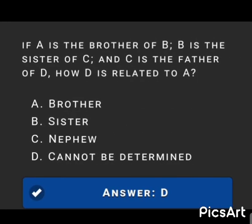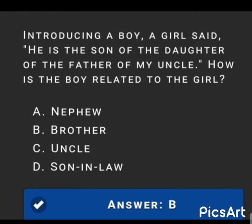Next MCQ: If A is the brother of B, B is the sister of C, and C is the father of D, how is D related to A? The answer is option D: Cannot be determined.